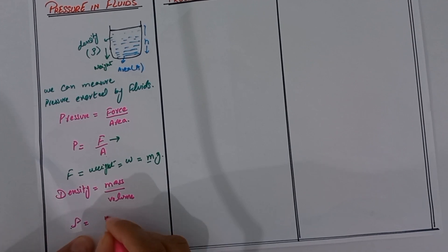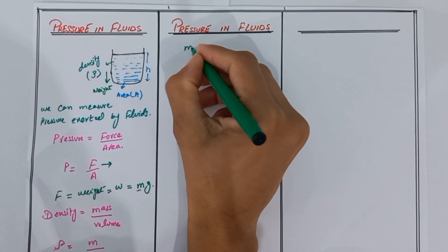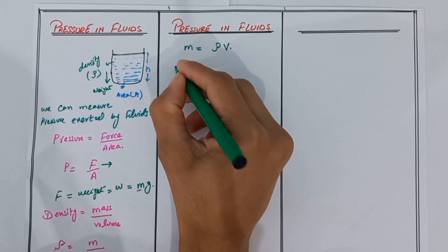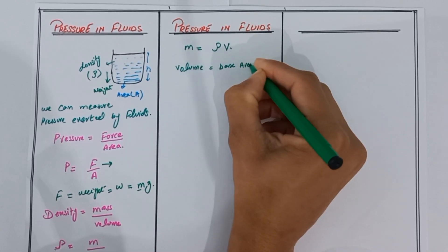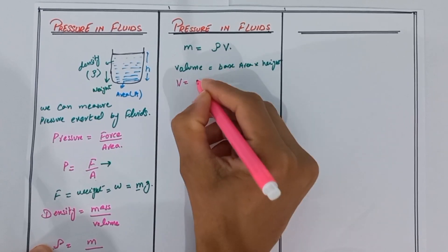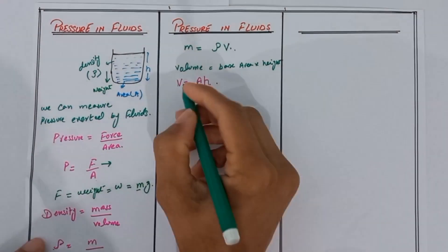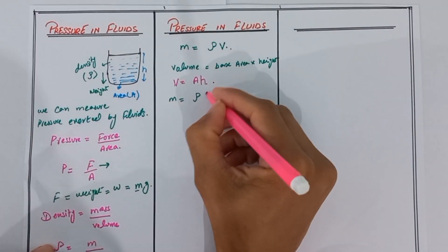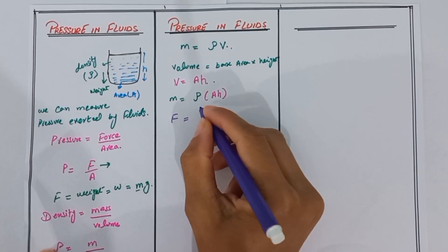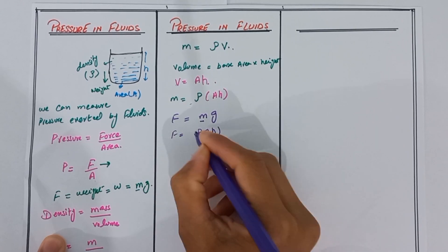Density is denoted by rho, mass by M, and volume by V. So we can calculate the mass of the water using the density formula: mass equals density times volume. Volume equals base area times height, so V equals A times H. Substituting, mass equals rho times A times H. Therefore, force F equals rho times A times H times g.